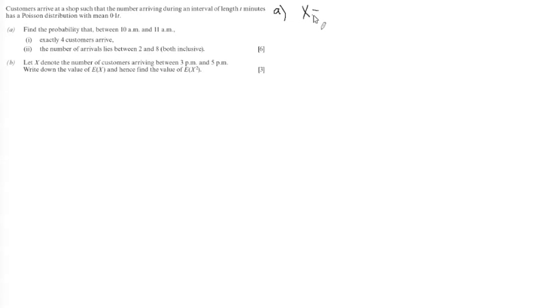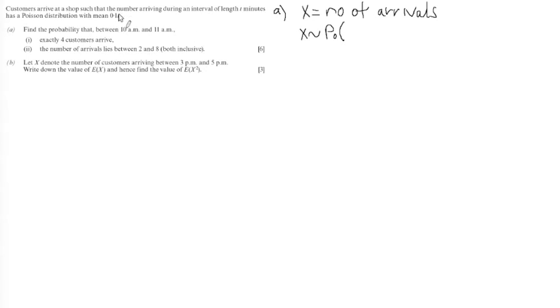We want to find the probability that between 10am and 11am, exactly four customers arrive. Before I can start calculating any probabilities, I need to identify the distribution we're going to be using. We're going to take X to be the number of arrivals, so X is distributed with a Poisson distribution. The mean is calculated by doing 0.1 times the number of minutes. We're looking at a one-hour period, so 0.1 times 60 gives us a Poisson distribution with a mean of 6.